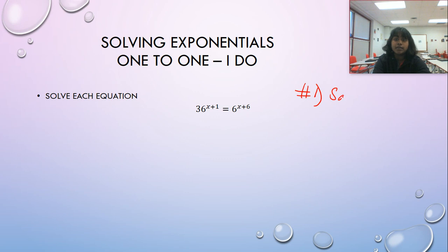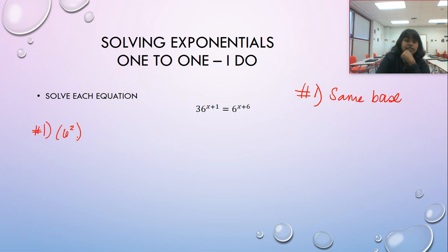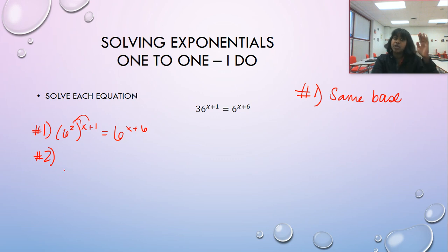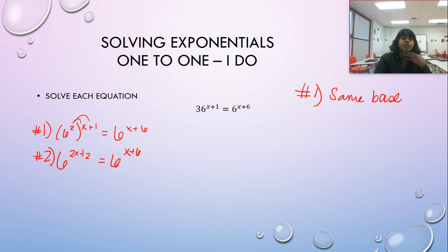Step one: get the same base. Rewrite 36 as 6 squared, so now we're getting much closer. There's a property to apply — distribute that exponent — which goes back to Algebra 2's power rule of exponents: a power raised to a power can be multiplied across. A really common mistake is writing 2x plus 1 and failing to fully distribute, so make sure you're not doing that.